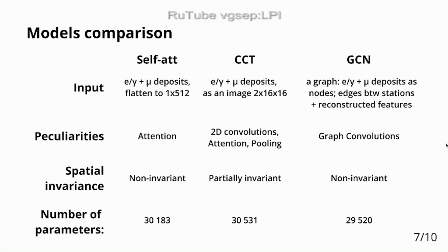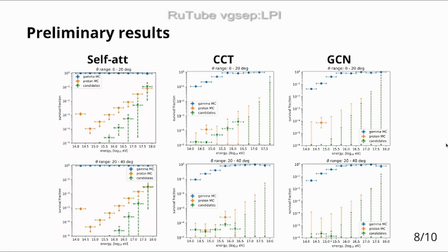The CCT is partially invariant because it takes 4x4 patches of the image and applies positional encodings to each patch, so the content within a patch is invariant while the patches themselves are not. Both the self-attention and graph neural network models are not invariant — they take positional information as part of their input. All models have a similar number of parameters, though the graph neural network requires slightly more operations per prediction; the difference is negligible.